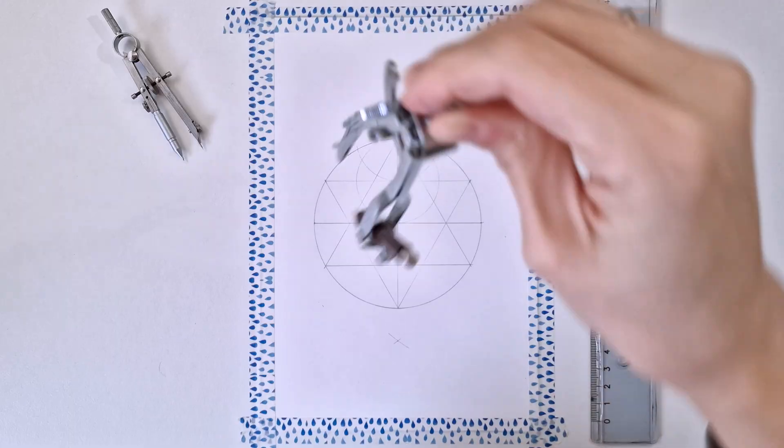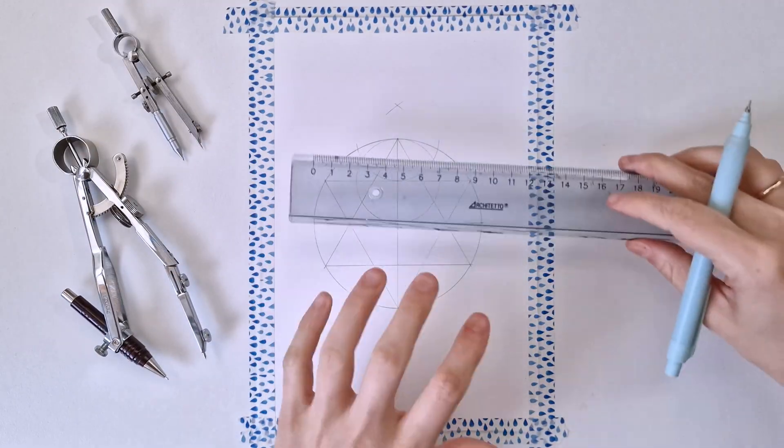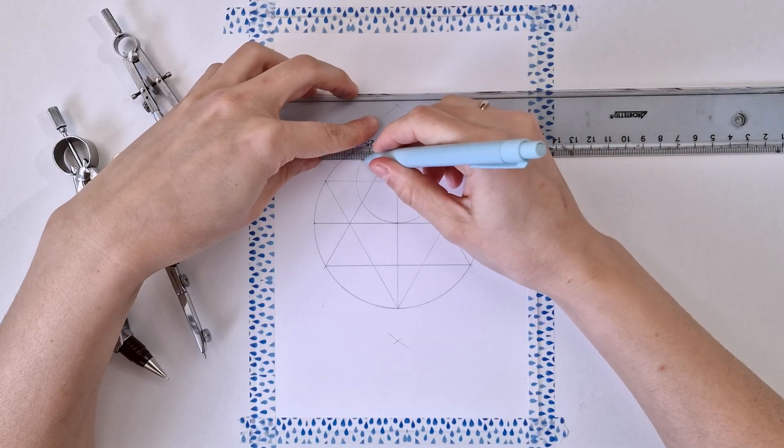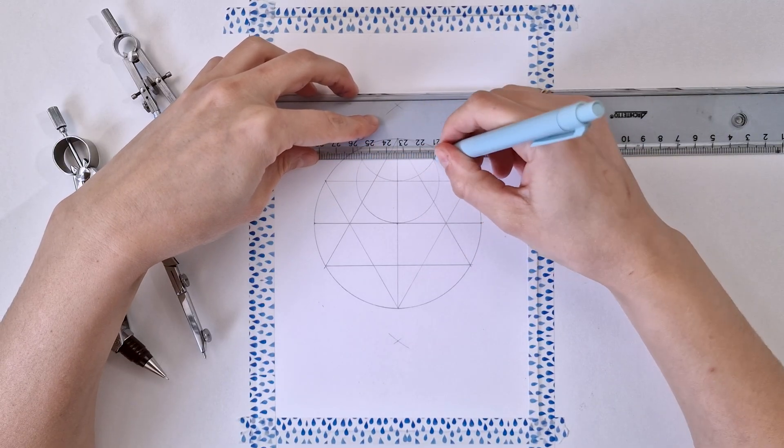This is because I need the intersections between these two circles and semi-circle, these two intersections to draw a line.